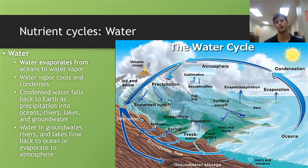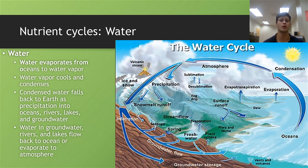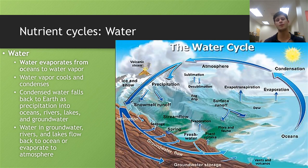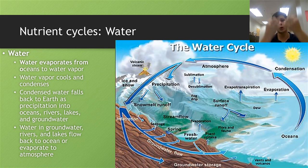The first of these nutrient cycles is the water cycle. Though we haven't impacted it too severely yet, we might do so with climate change. Within the water cycle, water typically begins in the ocean, is evaporated into the atmosphere as water vapor, cools and condenses back into liquid water, and falls to the ground as precipitation. If the water falls back into the ocean, the cycle simply repeats from there.